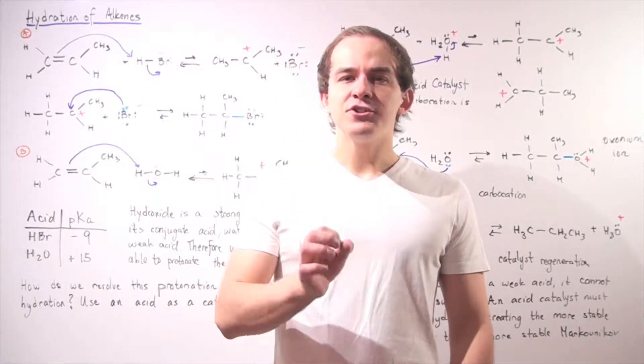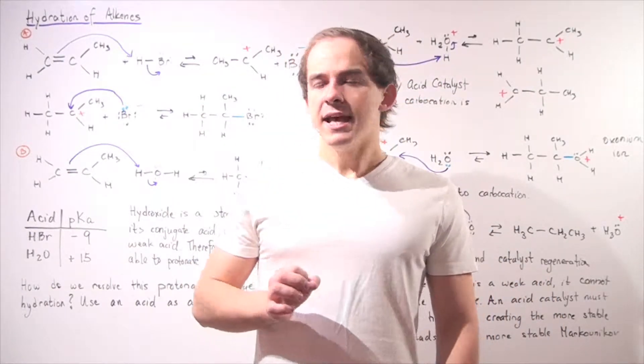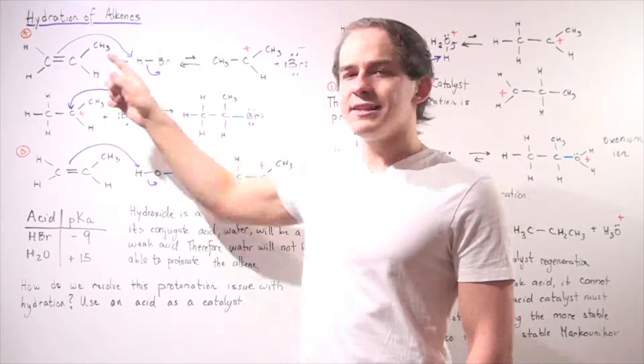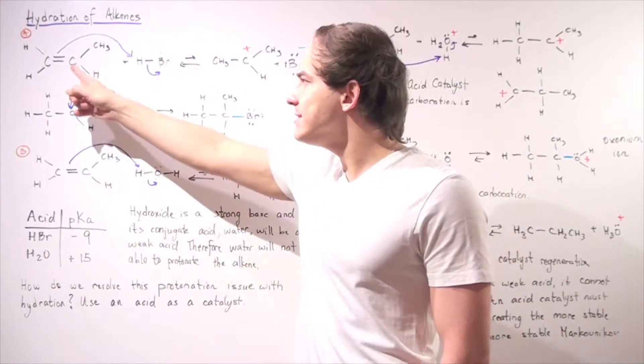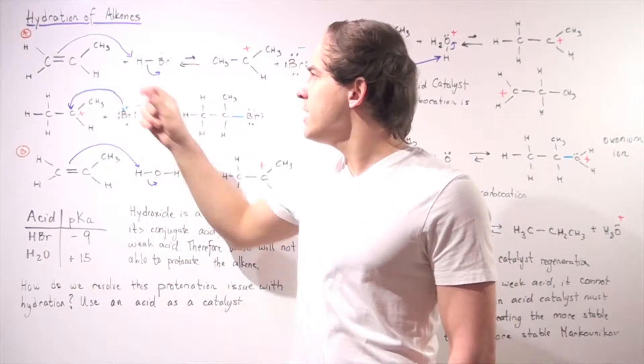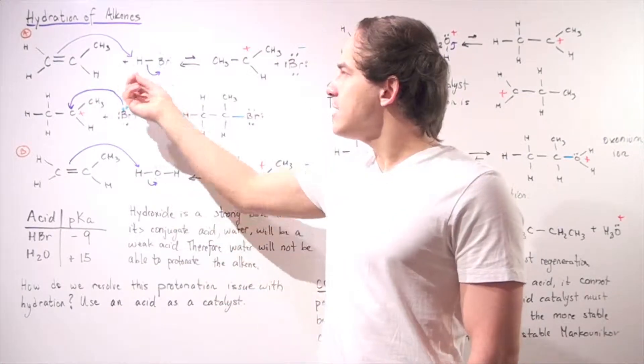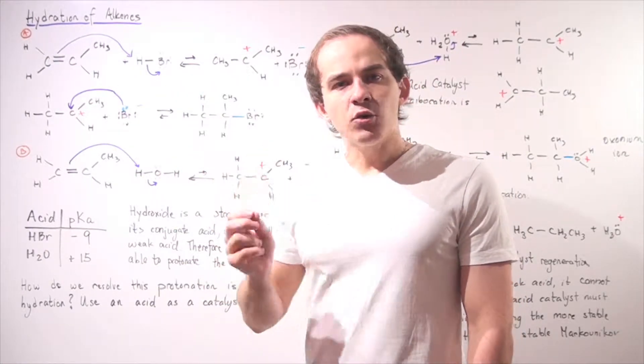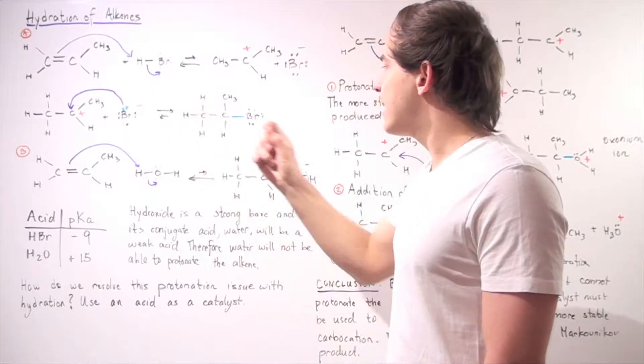So let's recall what a hydrohalogenation reaction is. Let's look at the following two alkenes. Let's suppose we have an asymmetrical alkene, shown here, and we add an HBr molecule.